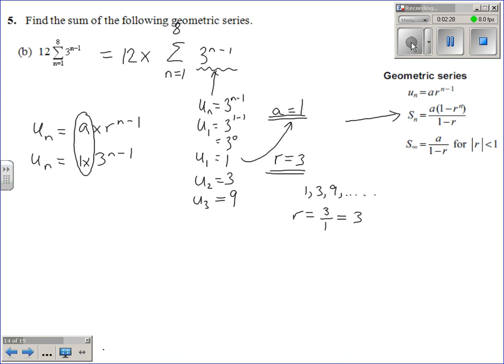So when you're working out the sum of the sequence for this, the fact there's a 12 here, it literally just means 12 times that. So you want to work out the sum, which is given by a(1 minus r to the n) over 1 minus r,